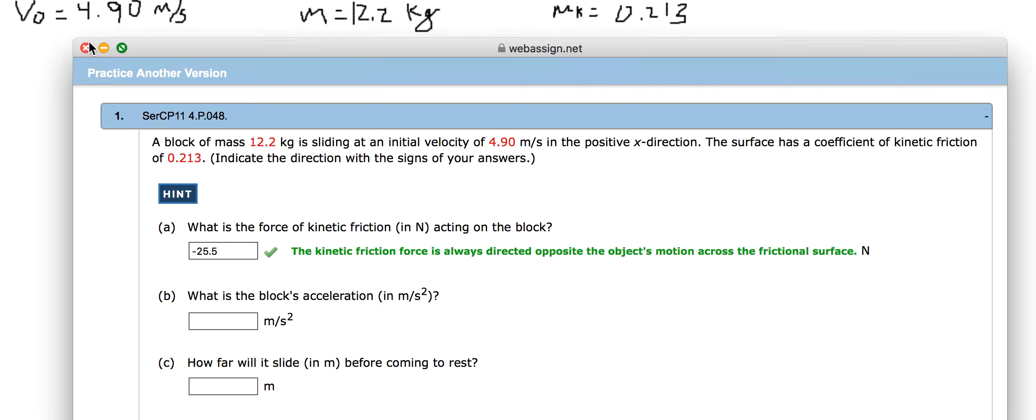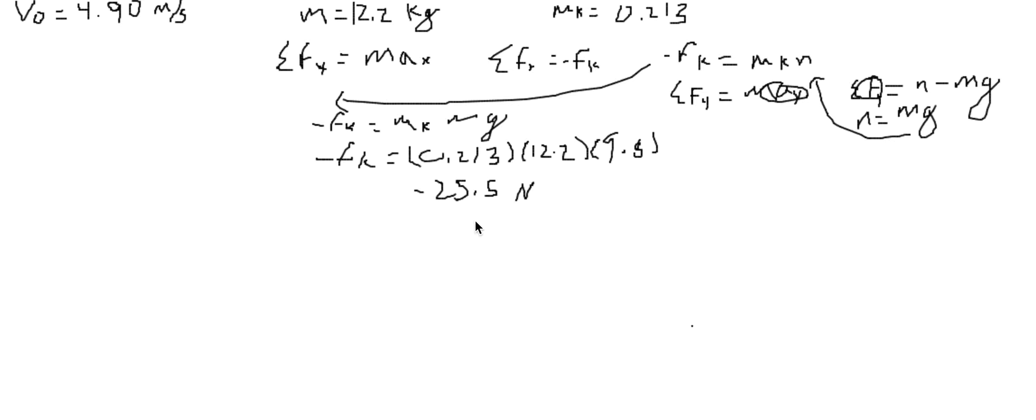Now we need to find the blocks acceleration. So we know the force here is going to be negative. I don't need to rewrite that. This is equal to this, which is equal to m, acceleration in the x direction. So we just have to divide by mass.